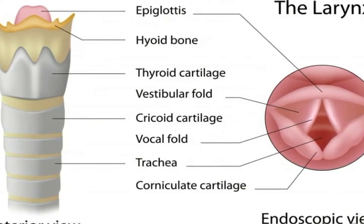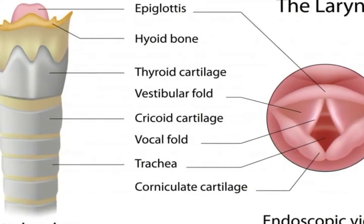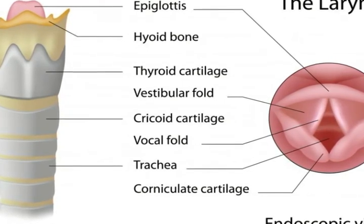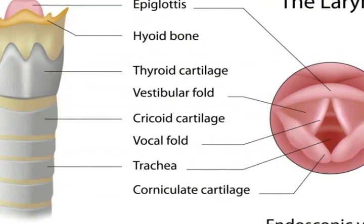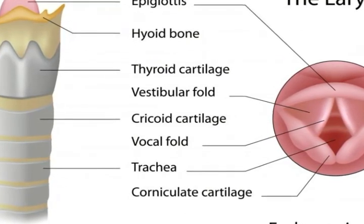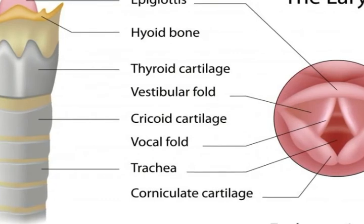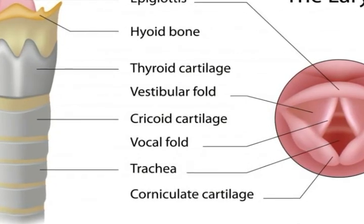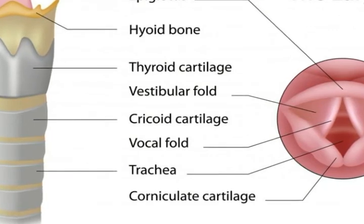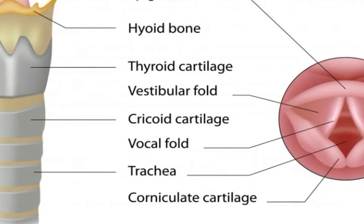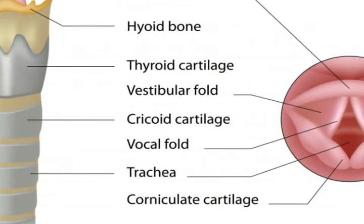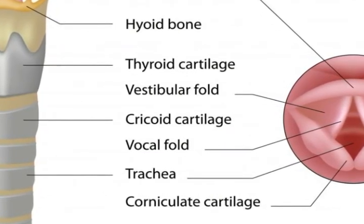Depending on the situation, a tracheotomy may be performed with either a local or general anesthetic. After the targeted area of the throat is sanitized, a scalpel is used to create a hole, called a stoma, through which a tracheostomy tube, also known as a tract tube, is positioned. Sutures may be taken to tighten up the area surrounding the stoma after the tract tube is in place. The newly positioned tract tube is usually further secured with a supportive device worn around the neck, such as a material or elastic band.